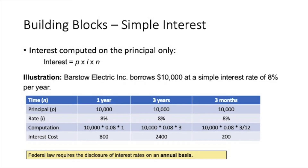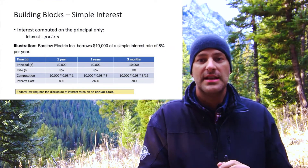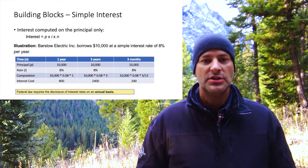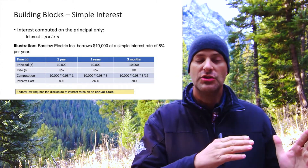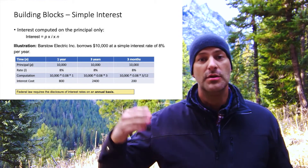We're going to start with simple interest as a building block. This is not how it functions in practice, but it is the foundation of everything that comes after. With simple interest, interest is computed only on the principal. For illustration, say Barstow Electric borrows $10,000 at a simple interest rate of 8% per year. Interest rates are always stated on an annual basis unless indicated otherwise.